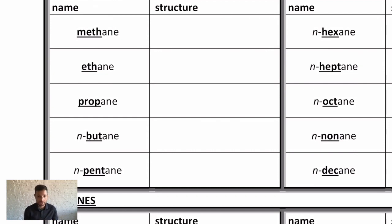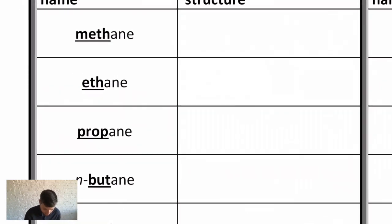Now, how we draw them as line structures: methane, you might say would just be a dot, technically that's correct, but no one does that. Write the formula CH4. Likewise for ethane, you could just draw a line and that does mean ethane, but it's such a stray-looking mark on paper we usually write at least the condensed structural formula: CH3-CH3.